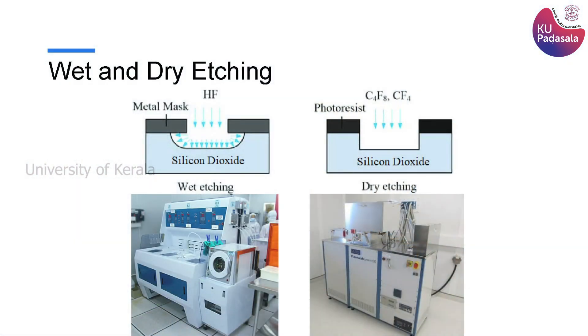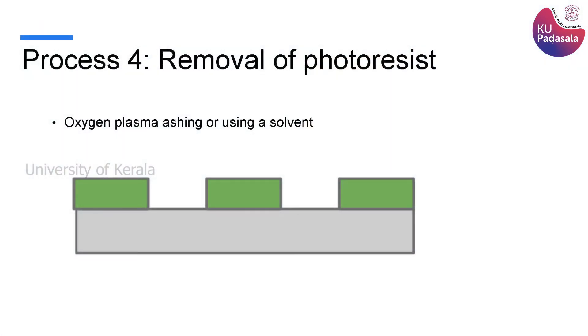The instruments used for dry etching activities are also shown in the picture. Now you understand how silicon dioxide has been removed. We have made three islands of silicon dioxide, though in the final image you see only two — the middle one will not be there eventually when the device is realized. After etching, the silicon dioxide is removed from exposed areas using either wet or dry etching.